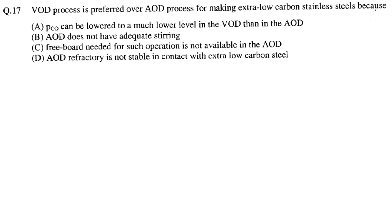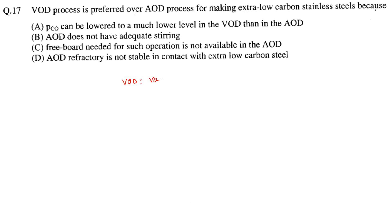Next question: the VOD process is preferred over the AOD process for making extra low carbon stainless steel because — if you know, VOD is Vacuum Oxygen Decarburization and AOD is also decarburization but using argon. Argon is used to decrease the pressure, and since VOD is already a vacuum, there is a further decrease in pressure, which helps in removal of carbon.